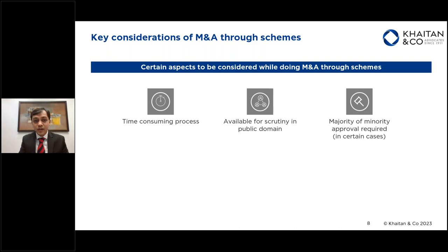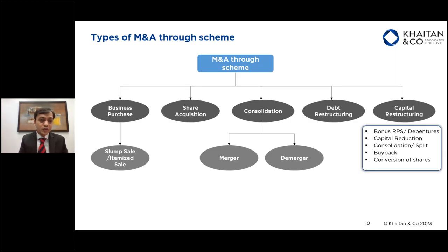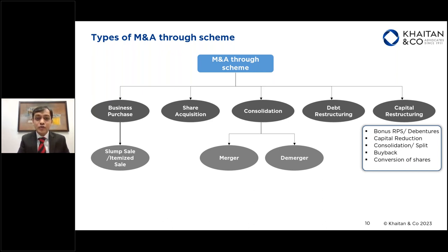Let us now understand the different types of M&A which can be done through a scheme. The general perception is that schemes are only for mergers or demergers, but that's not true — practically any kind of M&A or reorganization can be done through a scheme. Take the example of a business purchase: if a client wants to acquire a real estate project with significant approvals or licenses, one option is a simple business transfer agreement, but there is also the possibility of doing the business transfer through a scheme of arrangement.